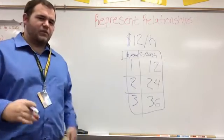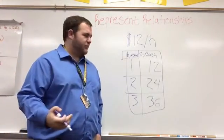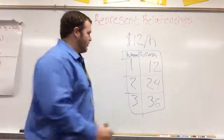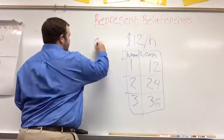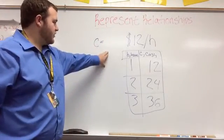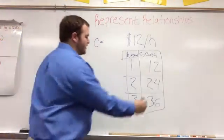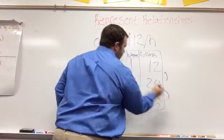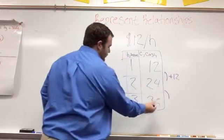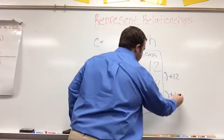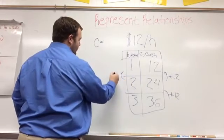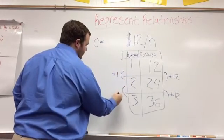The next one is going to be an equation and we're going to look at the table to create our equation. So we know we're going to have C equals the amount of money we make. The way we're going to do this is find the change in Y. So 12 to 24 is plus 12, 24 to 36 is plus 12. And then we're going to look at the change in X. 1 to 2 is plus 1, 2 to 3 is plus 1.